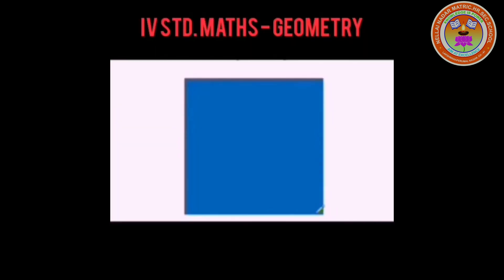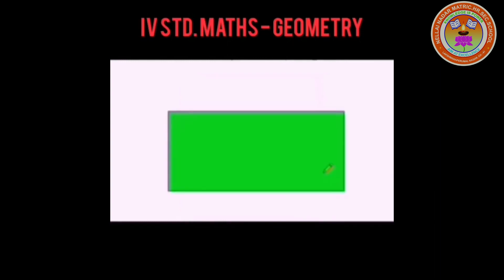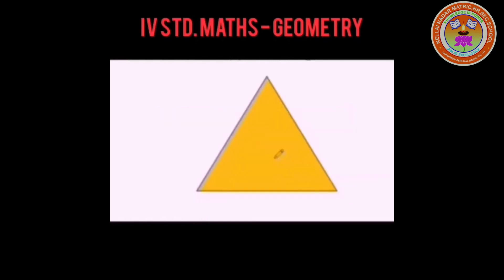This is a square, whose all sides are equal. A square has 4 sides and 4 corners. This is a rectangle. A rectangle has 4 sides and 4 corners. This is a triangle. A triangle has 3 sides and 3 corners.